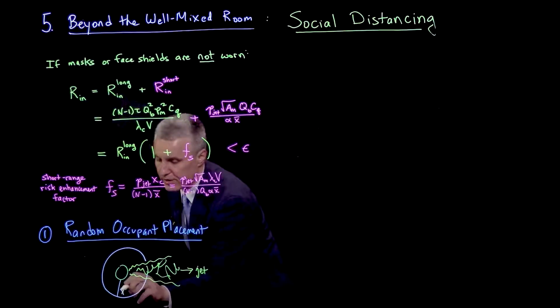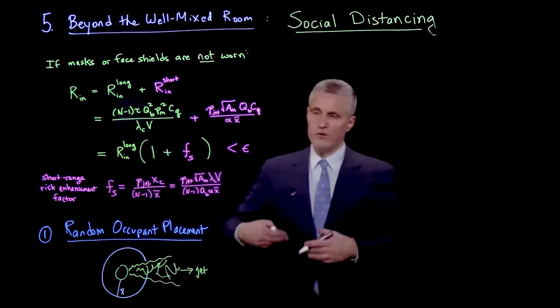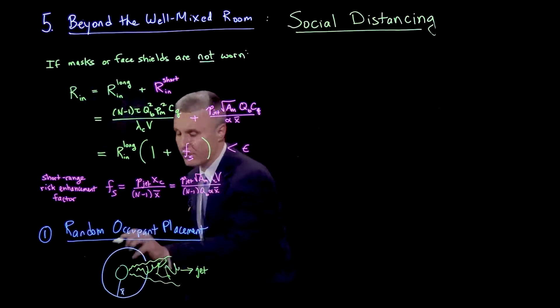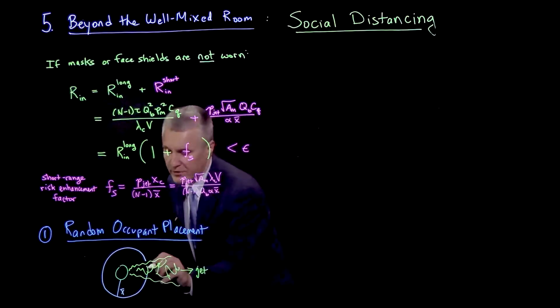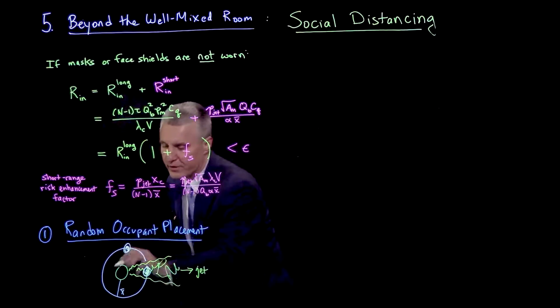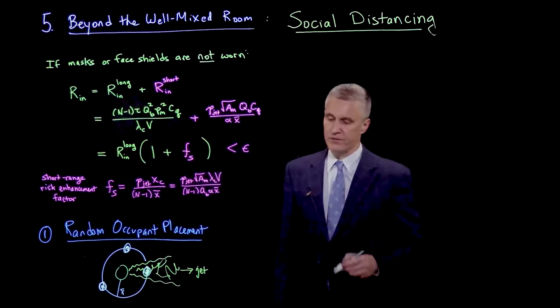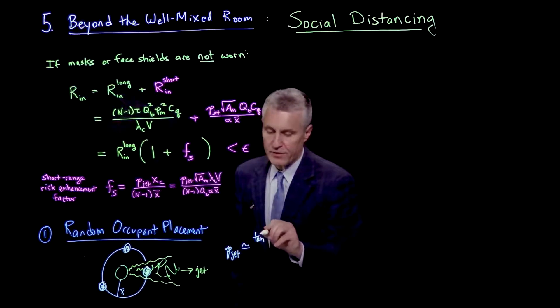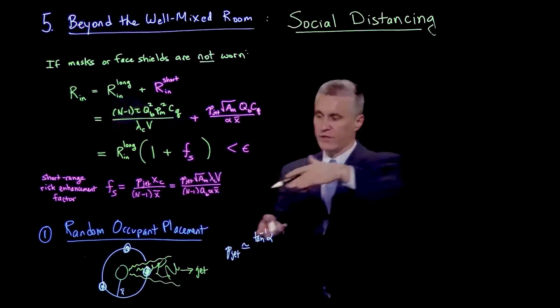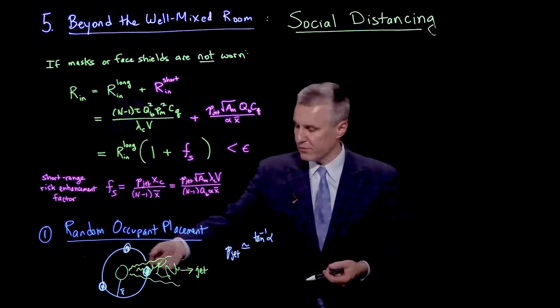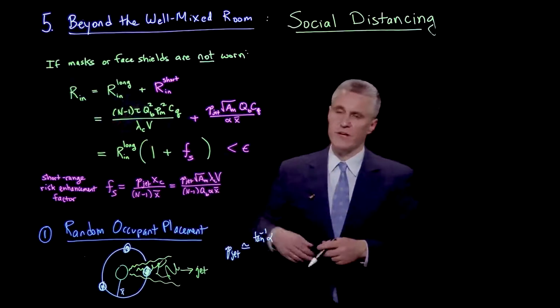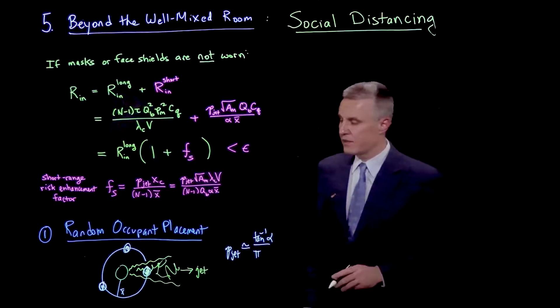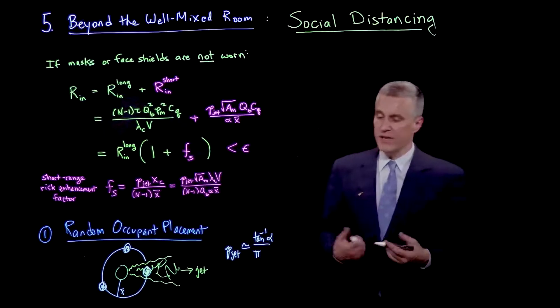At any given distance, there's a typical social distance here. At that distance, x bar, we'd like to say, what is the probability that a susceptible person is in the jet? That would simply be formed by taking the angle of the jet relative to the full circle. So we could write that p_jet is approximately the inverse tangent of alpha divided by pi.